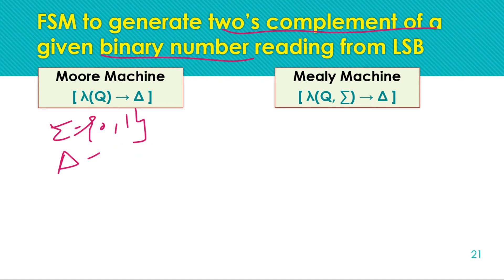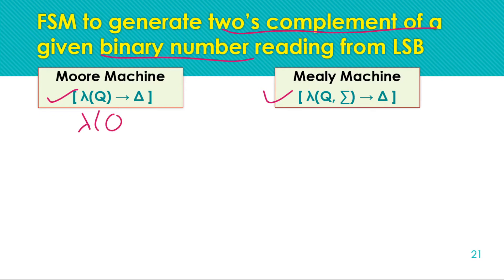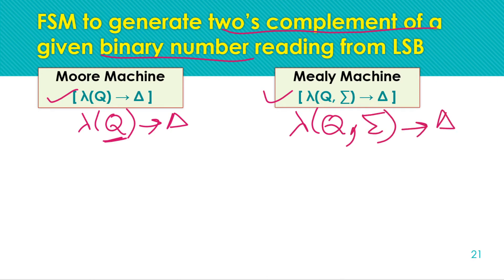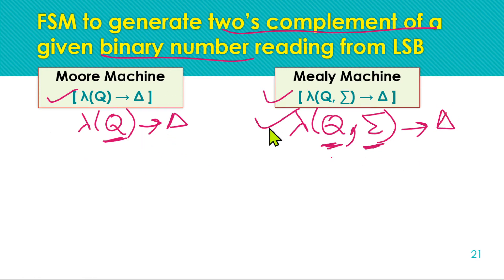For constructing Mealy and Moore machines, the Moore machine generates output corresponding to each state — for every state we get one output. The Mealy machine gives output for every combination of state and input symbol. For the Mealy machine, one state and one input symbol together produce one output symbol. For the Moore machine, output depends on the state alone.